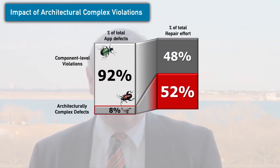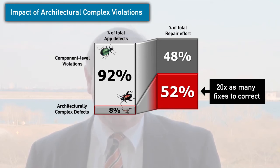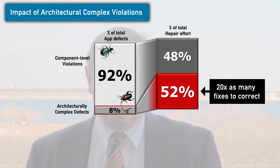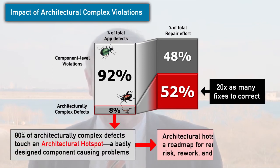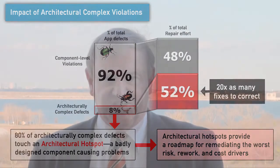Research is telling us that these architecturally complex defects, although accounting for sometimes as little as 10% of the defects in the system, typically take at least half of the effort to repair — so they're extremely costly compared to other defects. Experience in the field and logs we're seeing on major outages and other operational problems are now suggesting that these architecturally complex defects can account for as much as 90% of all the major operational problems we're seeing in large IT systems.